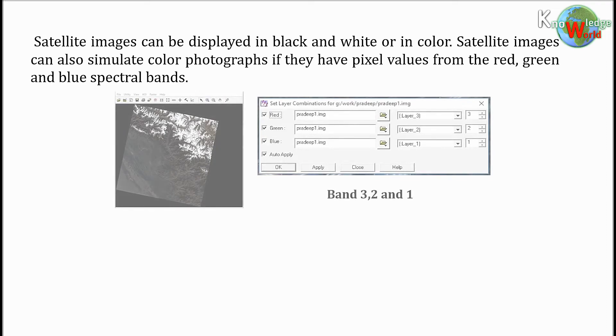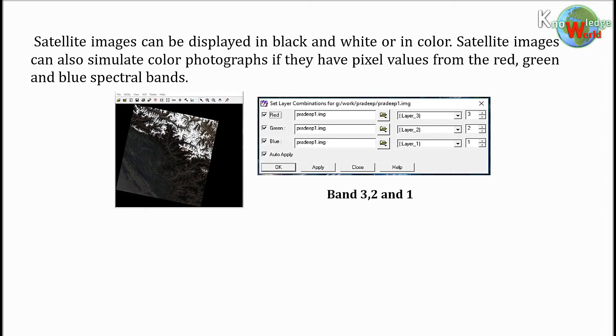The image looks like a color photograph if bands three, two, and one are assigned to red, green, and blue, respectively.